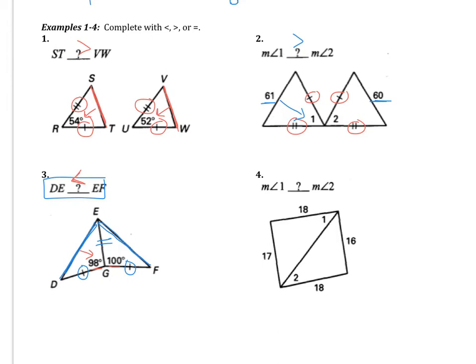For example four, the hinge theorem applies because there are the two sides of 18, and the middle side by the reflexive property. Comparing angles one and two, angle one is located across from the larger side — 17 compared to 16 — so angle one will be larger than angle two. Hopefully you got those right; if not, you will have a chance to practice more in the video and tomorrow in class.